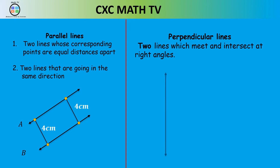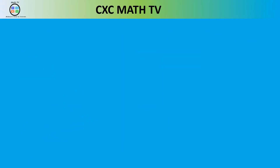Perpendicular lines are two lines which meet or intersect at right angles — they intersect at a 90-degree angle. That's what we call perpendicular lines.